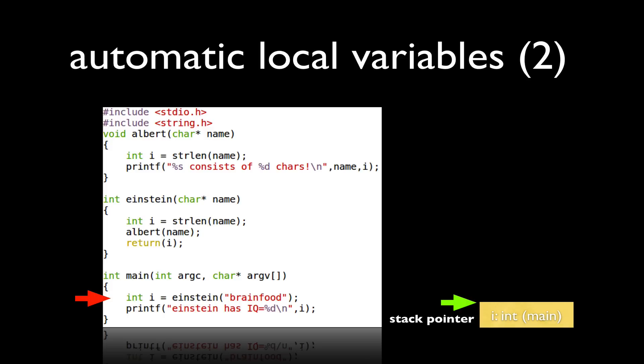For example, when I invoke main, the int i that is defined in main actually gets allocated on the runtime stack. So my stack pointer is adjusted to provide space for this local variable to be defined on the call stack.